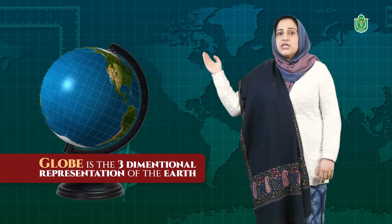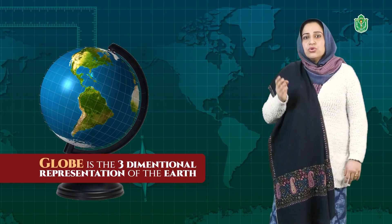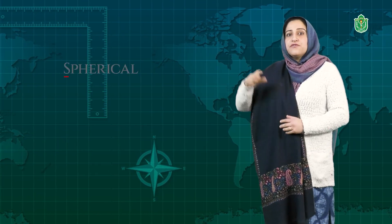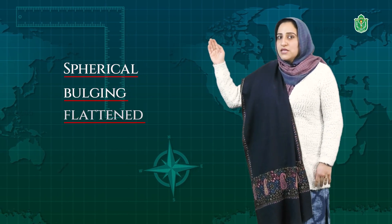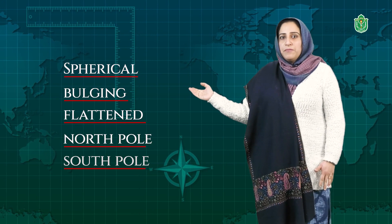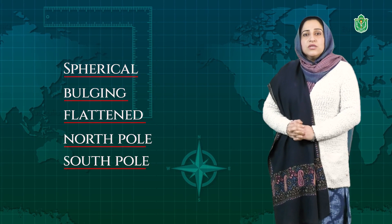We will begin with the globe. What is a globe? It is a three-dimensional representation of the earth — an exact model of the earth. It shows us the exact nature of the earth: spherical, bulging in the center, and flattened at the poles, north pole and south pole. It shows us the distribution of the continents as well as the oceans on the earth.